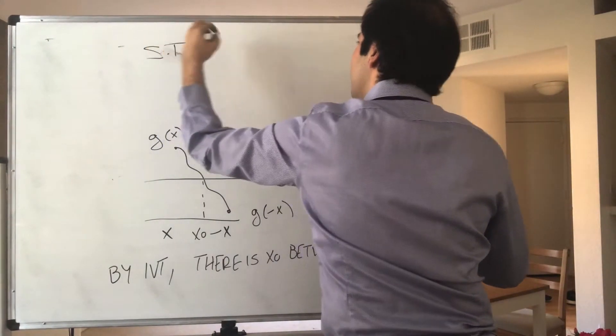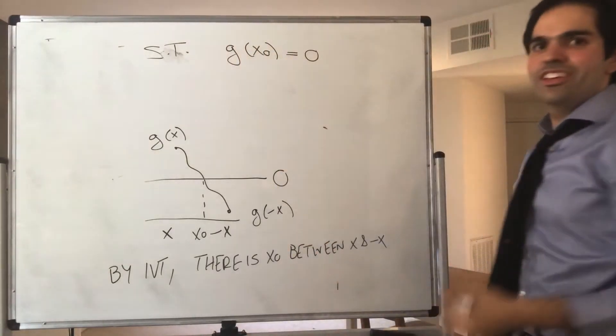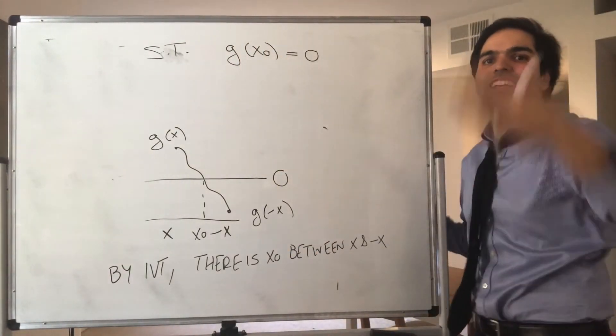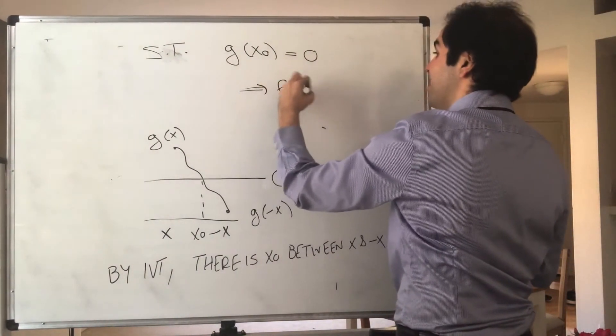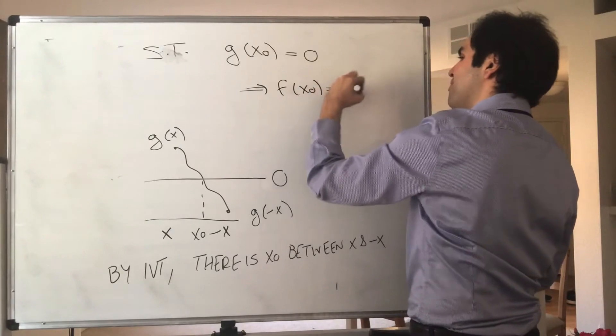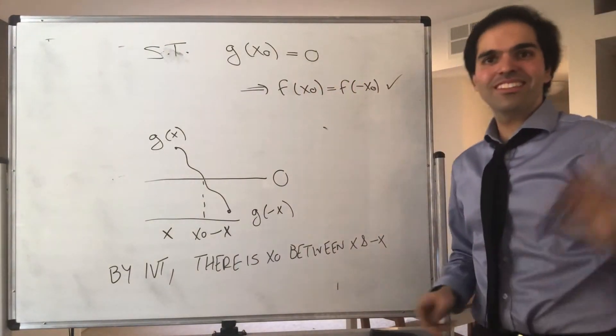Such that g(x₀) equals zero, which is either a contradiction or the end of the proof, however you like to think about this. Because then f(x₀) equals f(-x₀), and we're done. How cool is that?